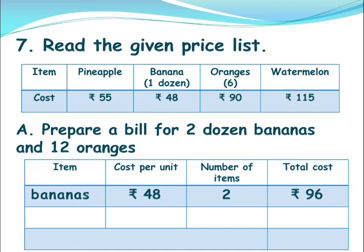You also have oranges to calculate. So you'll write oranges. Cost per unit here is six oranges; for six oranges it is 90 rupees. 12 oranges means two sets of oranges — for one set it is six oranges and 90 rupees. So for 12, that is two sets, the number of items becomes two. 90 into two becomes 180 rupees.